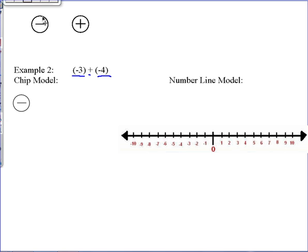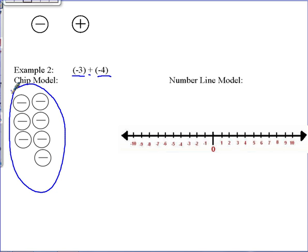So I'll take 3 of my negative chips. Now add 4 more negative chips. Now one place that you can make a common error is think that here you have a zero pair. But unlike the positive and the negative that we had on the previous problem, these are both negative. Therefore, they don't equal zero.